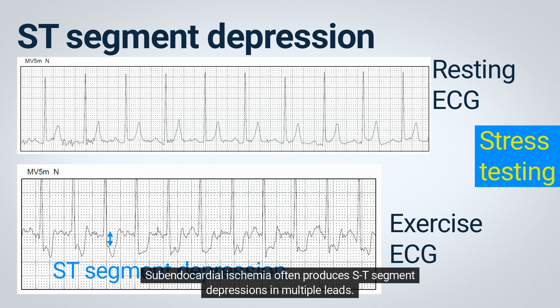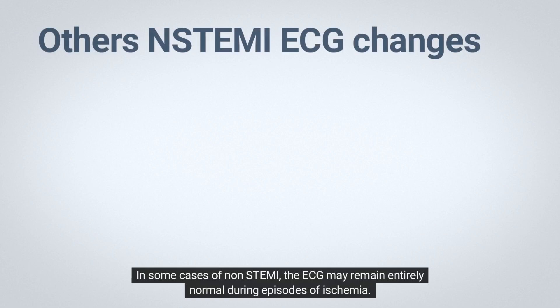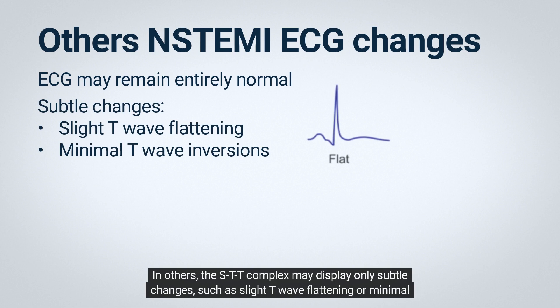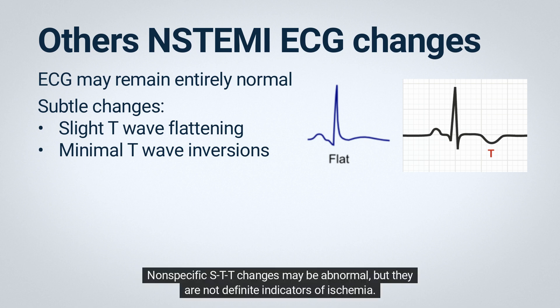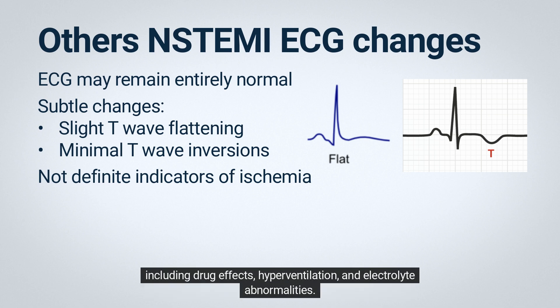Subendocardial ischemia often produces ST-segment depressions in multiple leads. In some cases of non-STEMI, the ECG may remain entirely normal during episodes of ischemia. In others, the STT complex may display only subtle changes such as slight T-wave flattening or minimal T-wave inversions, which are nonspecific STT changes. Nonspecific STT changes may be abnormal, but they are not definite indicators of ischemia — they may be a sign of ischemic heart disease, but may also be caused by many other conditions, including drug effects, hyperventilation, and electrolyte abnormalities.